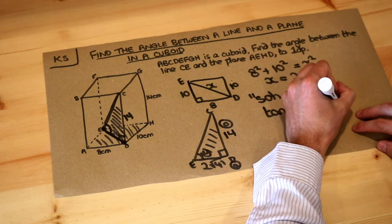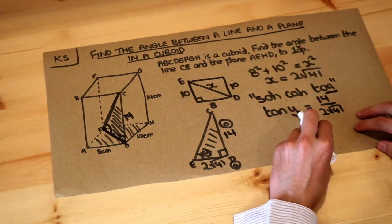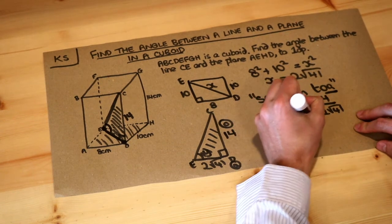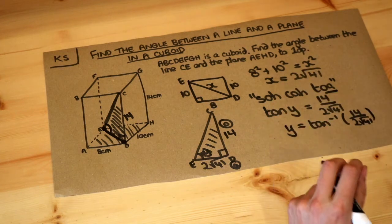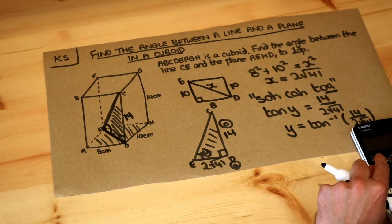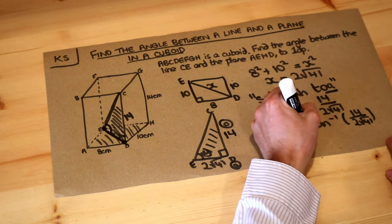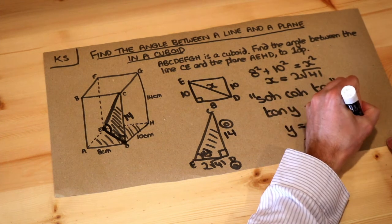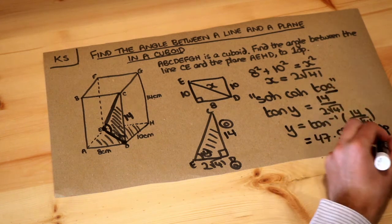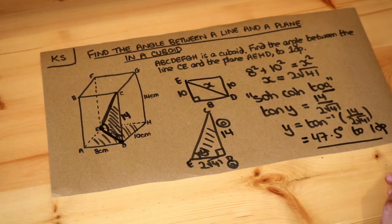And then to get rid of that tan in front of the Y, I'm just going to do inverse tan of both sides. So I do that on my calculator, making sure your calculator is in degrees mode, that gives me an angle of 47.5 degrees to one decimal place, and that's the final answer.